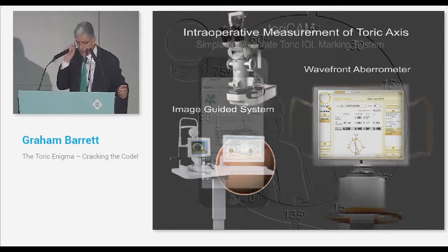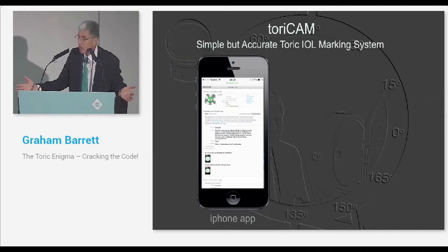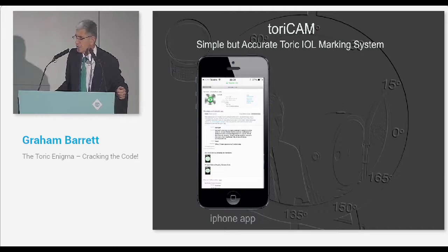This is somewhat new. I call it the Toric Cam system, simple but accurate toric marking. You need three things. You need an iPhone and an iPhone app, and that, I'm pleased to say, is available on the Apple Store for free. You can download it. You need a macro lens because you need a magnified image. And if you speak to Haag-Streit, they'll be able to help you with a macro lens. And you need a felt tip marking pen. Those are the three things you need.